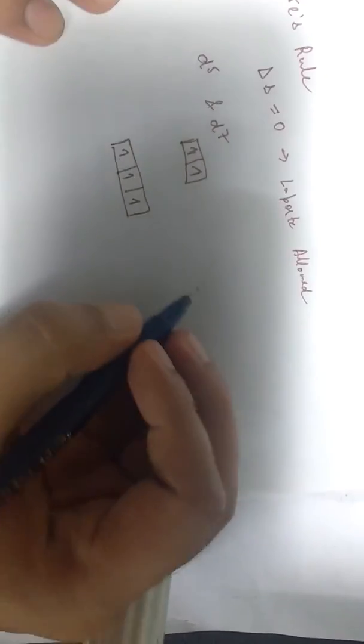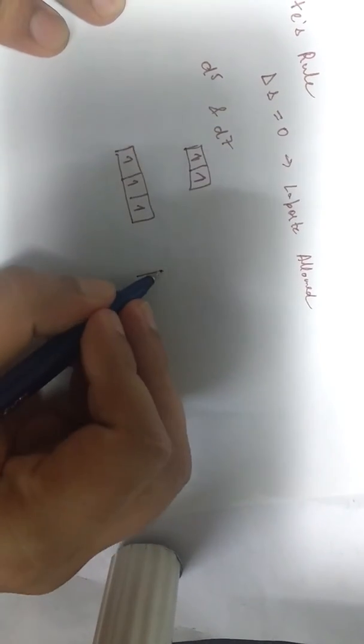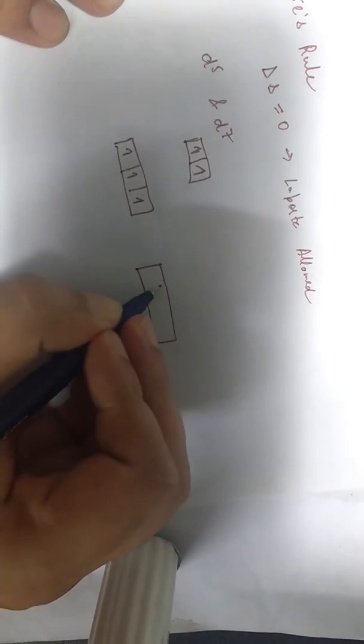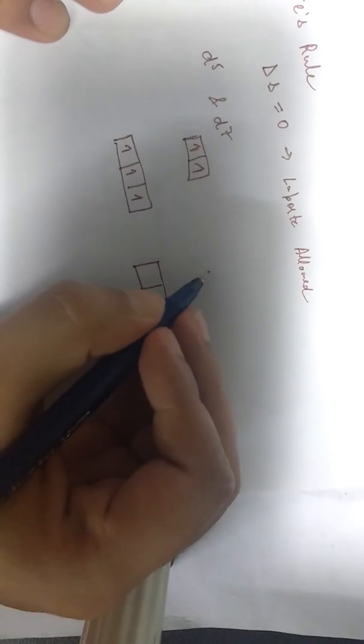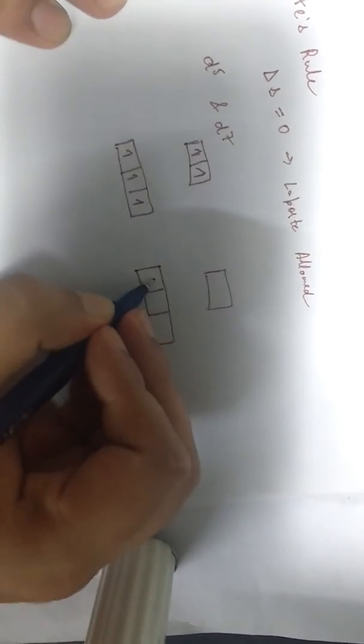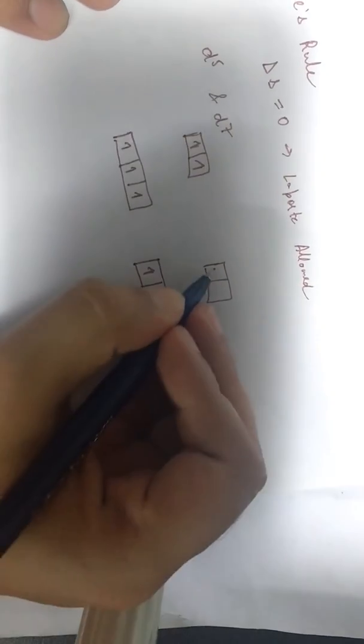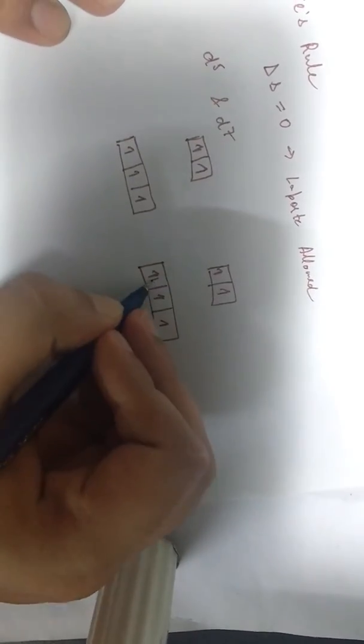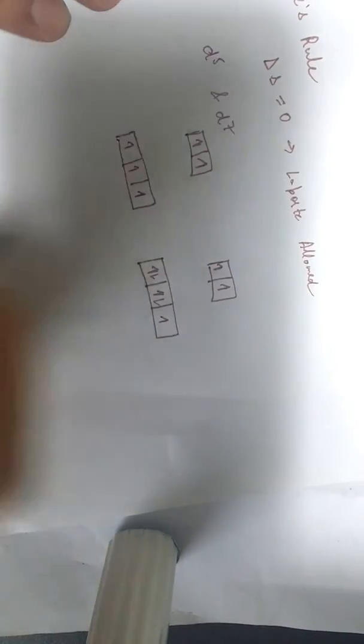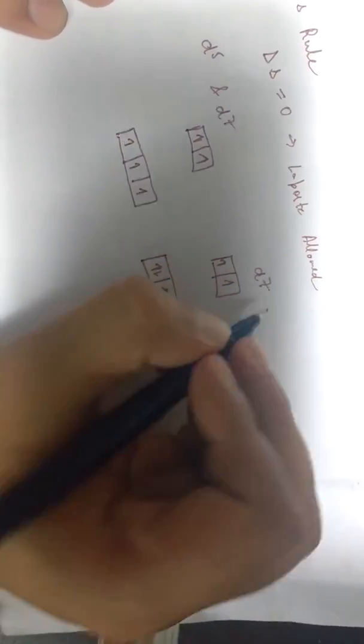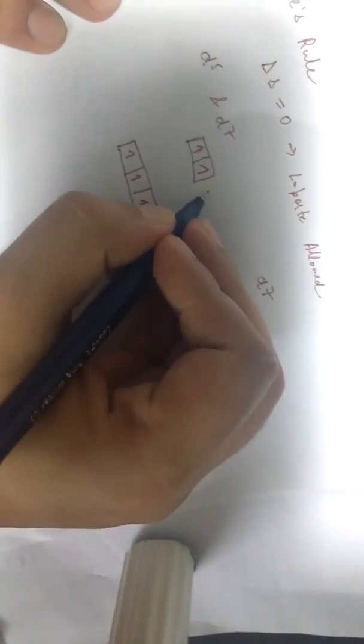And I'll draw over here for D7. 1, 2, 3, 4, 5, 6, 7. Now this is for D7 and this is for, like I stated, D5.